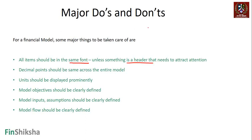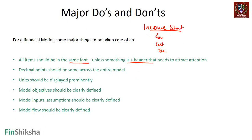For example, if I'm listing down revenue, operating revenue, costs, etc., then on the top 'income statement' may be in a different font size, but everything else has to be in a similar font. Revenue, costs, tax - everything has to be in the same font essentially.